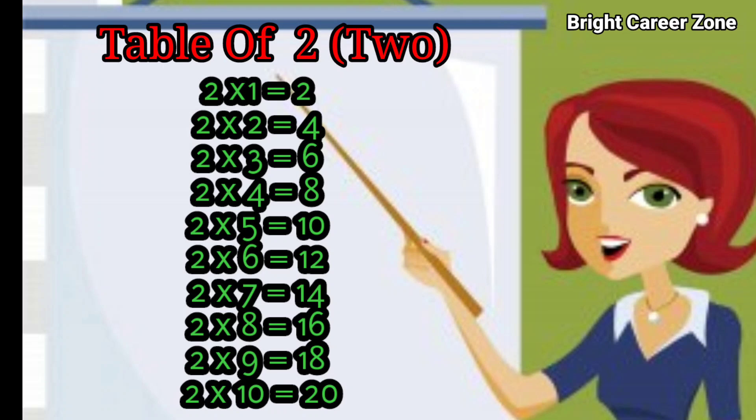Now, you children, please tell the table of 2. 2 1's are 2, 2 2's are 4, 2 3's are 6, 2 4's are 8, 2 5's are 10, 2 6's are 12, 2 7's are 14, 2 8's are 16, 2 9's are 18, 2 10's are 20.